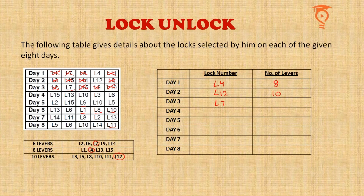On Day 4, L15 appears the next day, L13 appears on Day 7, L10 appears on the last day, and L6 also appears on another day — so Day 4's lock must be L3, which belongs to the 10-lever group. Moving to Day 5: L2 can be seen later and L10 and L5 can also be seen later.